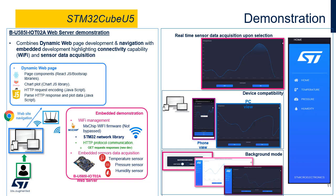The web page will be loaded on the client side. It contains four main menus: Home menu with the product and web page description, Temperature menu, Pressure menu, and Humidity menu. The user can choose any menu and start or stop the different sensor acquisitions.